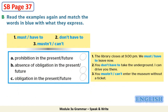Let's move to task B now. Read the given instructions: B. Read the examples again and match the words in blue with what they express. What does each word in blue express? A. Prohibition in the present/future — prohibition means something that you cannot do. B. Absence of obligation in the present/future — obligation means something that you have to do. C. Obligation in the present/future.